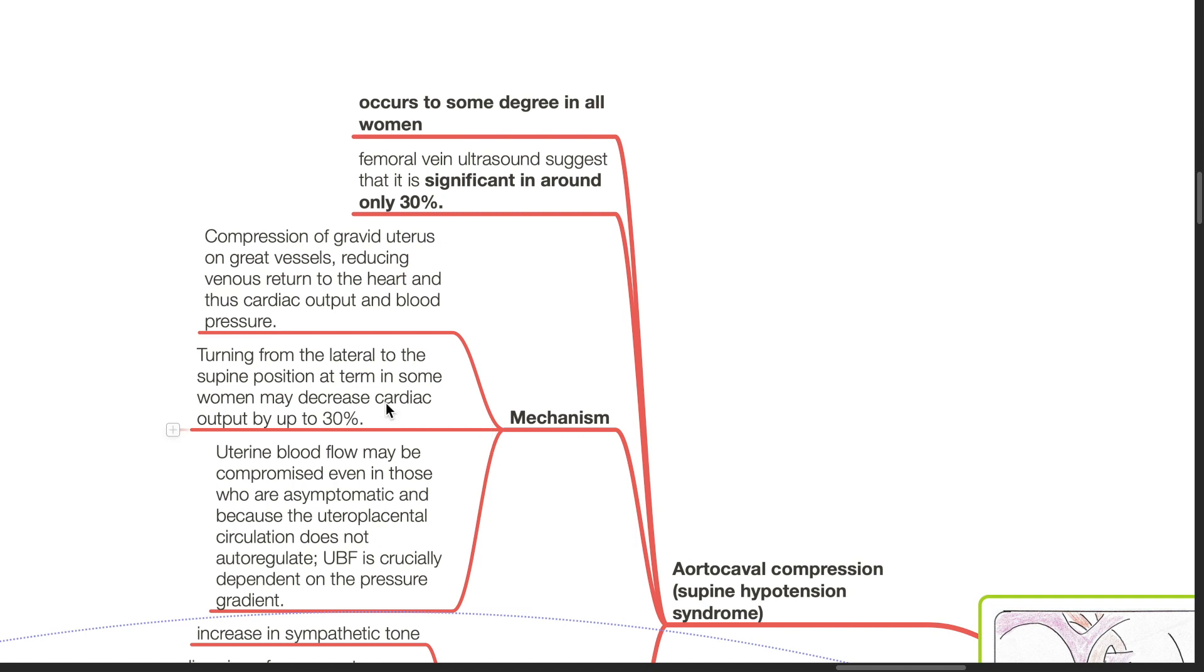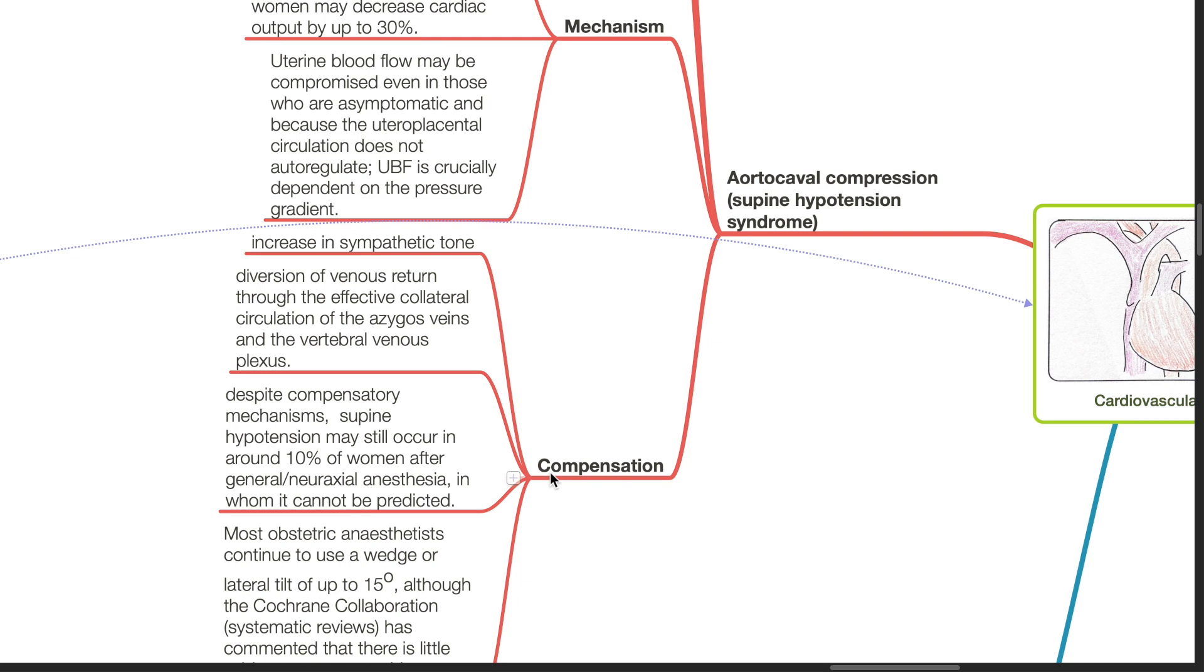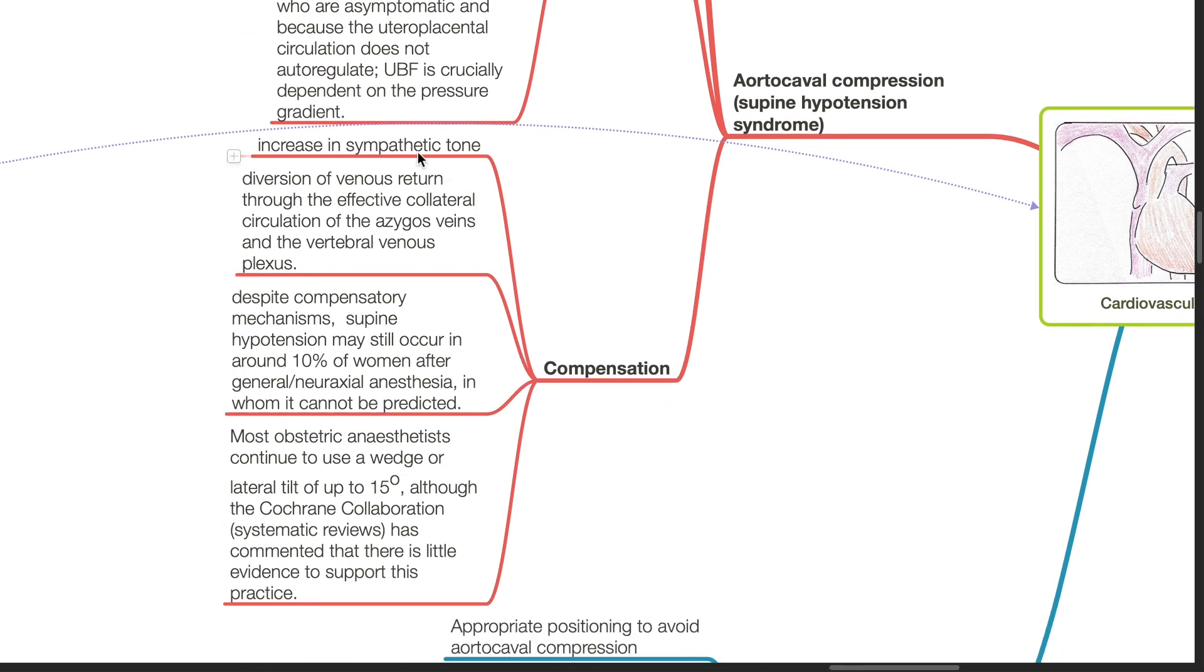UBF may be compromised even in those who are asymptomatic because the uteroplacental circulation does not autoregulate. UBF is crucially dependent on the pressure gradient.